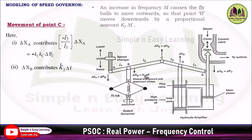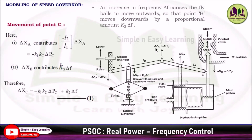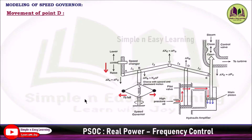The movement of point C is decided by points A and B. Point A contributes −K1·Kc × del_Pc, and point B contributes K2 × del_f. Therefore, del_Xc = −K1·Kc·del_Pc + K2·del_f. Take this as Equation 1.